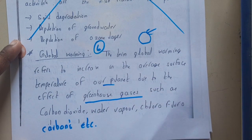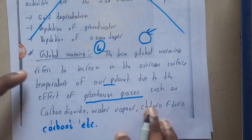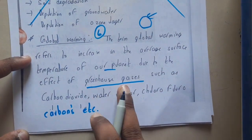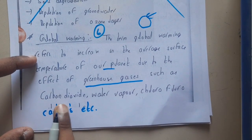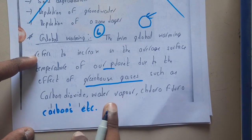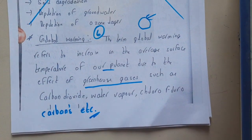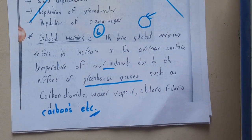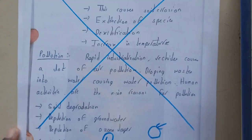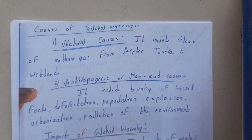We'll be discussing greenhouse gases separately, but let us mention some names. Carbon dioxide, water vapor, and chlorofluorocarbon — these are the three most common substances present in high quantities in the air which cause global warming.